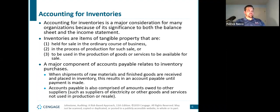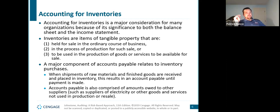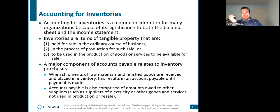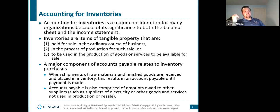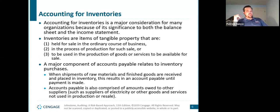This is on page 571. Accounting for inventory is a major consideration for many organizations because of its significance to both the balance sheet and the income statement. On the balance sheet we have inventory itself; on the income statement we're mainly talking about cost of goods sold; and accounts payable also affects the balance sheet. Inventory items are tangible property held for sale in the ordinary course of business, or in process of production for such sale, or to be used in producing goods or services available for sale.